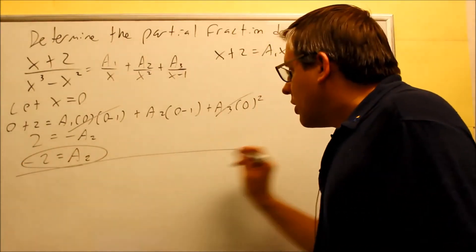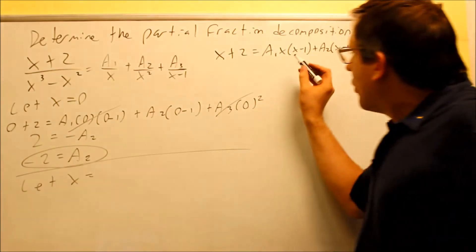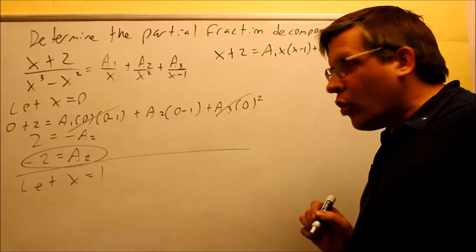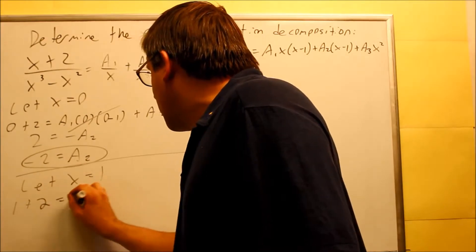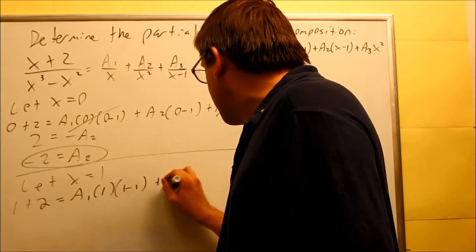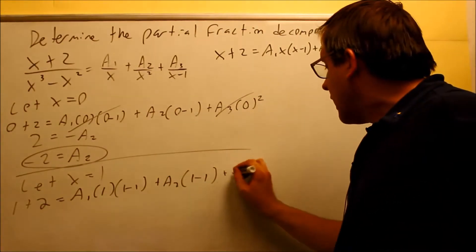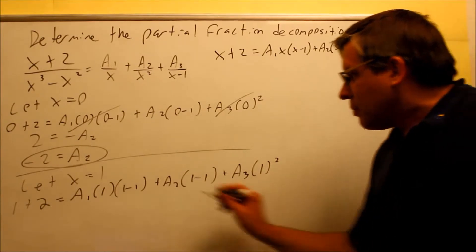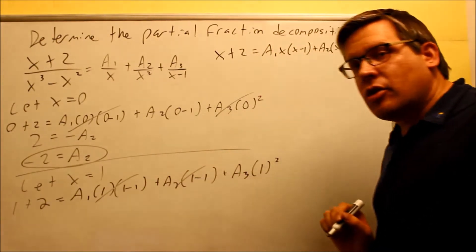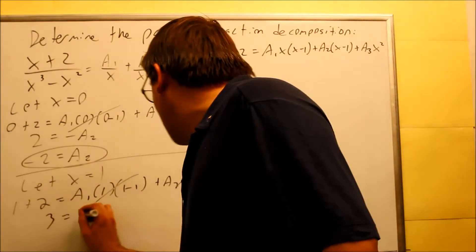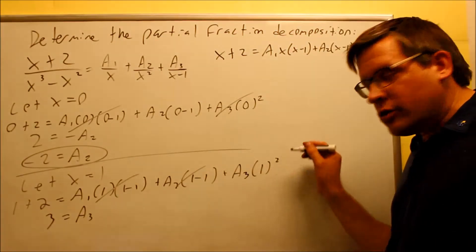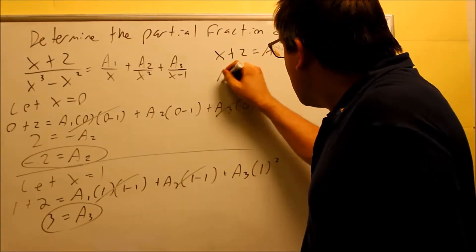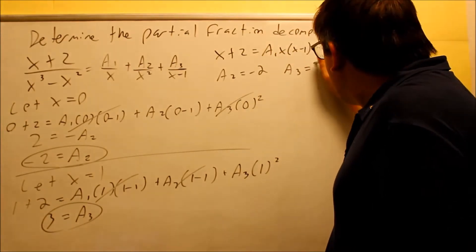Next, I'm going to let x equal one. Putting one into both sides: one plus two, then a1 times one times one minus 1, plus a2 times one minus 1, plus a3 times one squared. The parts containing one minus one are both zero, so those terms cancel. I get three equals a3 times one, so a3 equals three. Now I have a2 equals negative two and a3 equals three.